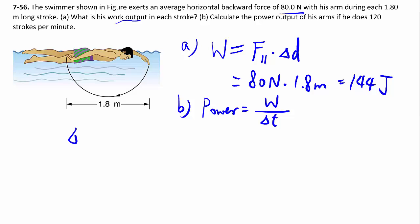So we have to do some conversion. Delta time here per every stroke they're telling us is equal to every one minute you're getting 120 strokes, but we want seconds because it's in joules per second. So we have to multiply by 60 seconds per minute and it works out to be 0.5 seconds per stroke.